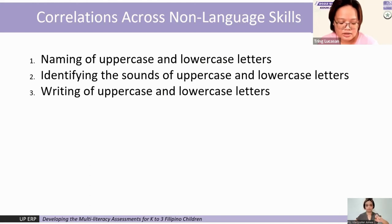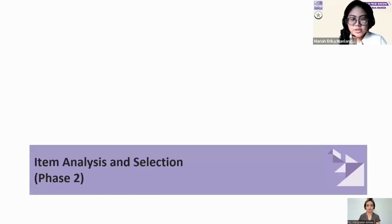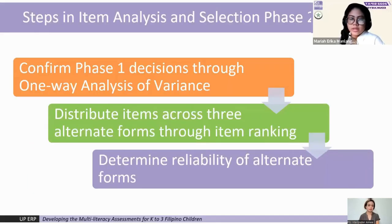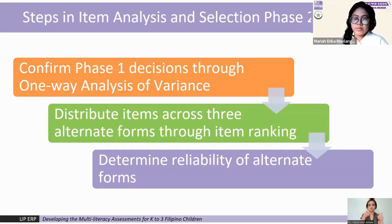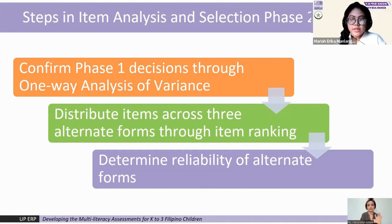After these initial analyses, items were further studied. In the second phase of item analysis and selection, we underwent the following steps, first of which was a one-way analysis of variance. This was done to examine whether there were any significant differences in the performances of the different grade levels for each test item. The results of this statistical analysis then informed our decision on whether a particular test item was retained or further revised.